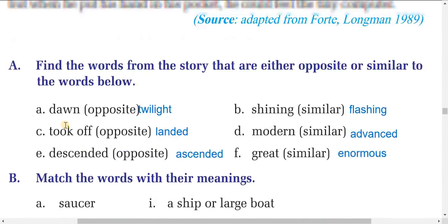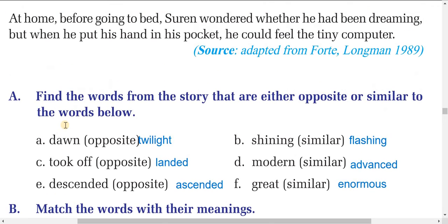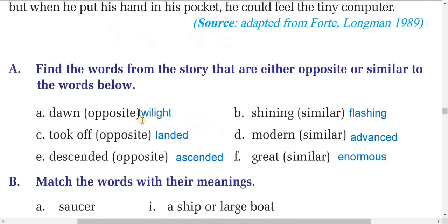Now, find the words from this story that are either opposite or similar to the words below. From the text we will find the similar or opposite words for the following. First: dawn — dawn means early morning. The opposite is dusk. Next: shining — the similar word is flashing.